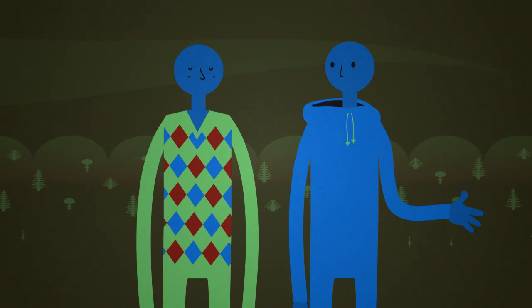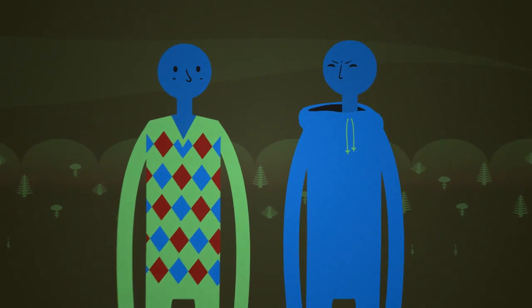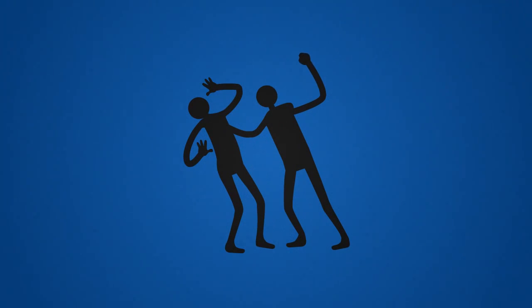You try to persuade him, but it's no use. Imagining yourself in this situation, do you think it's okay to threaten to use physical force against George to get him to do the right thing?